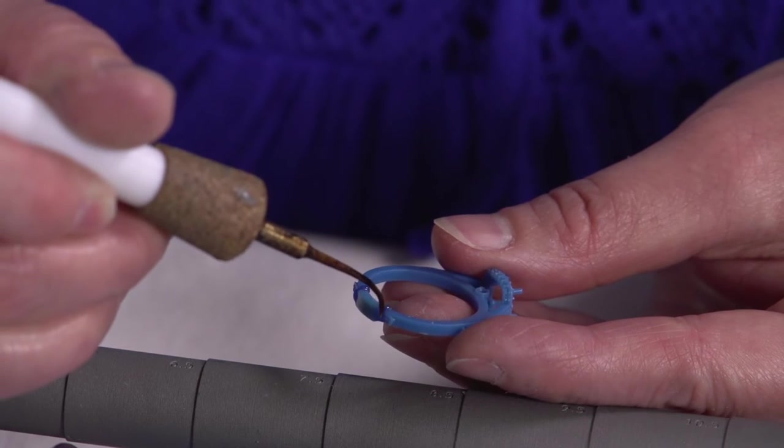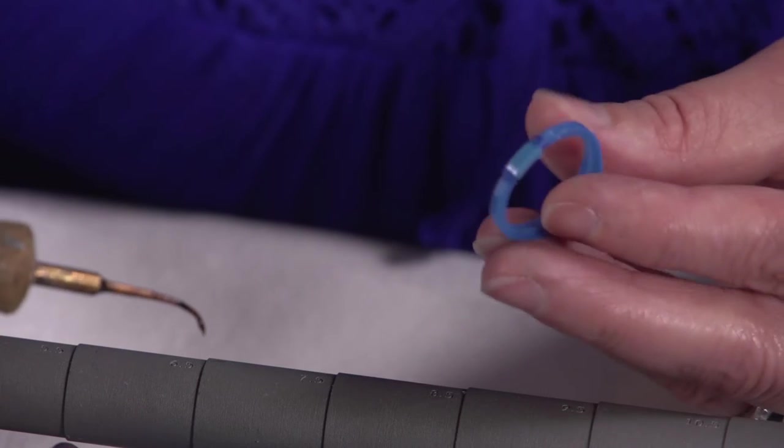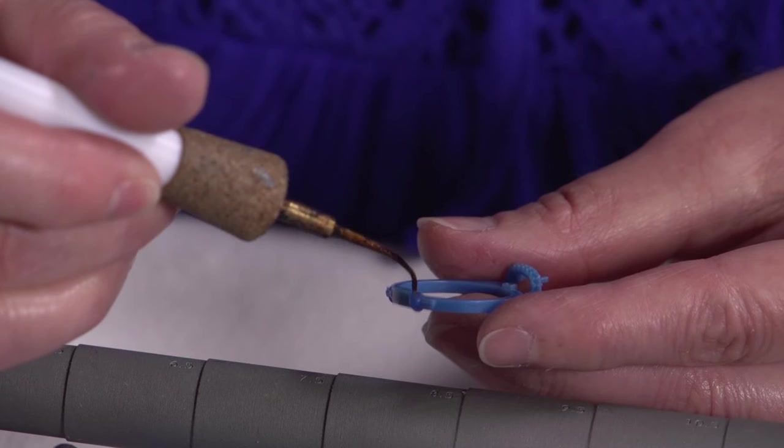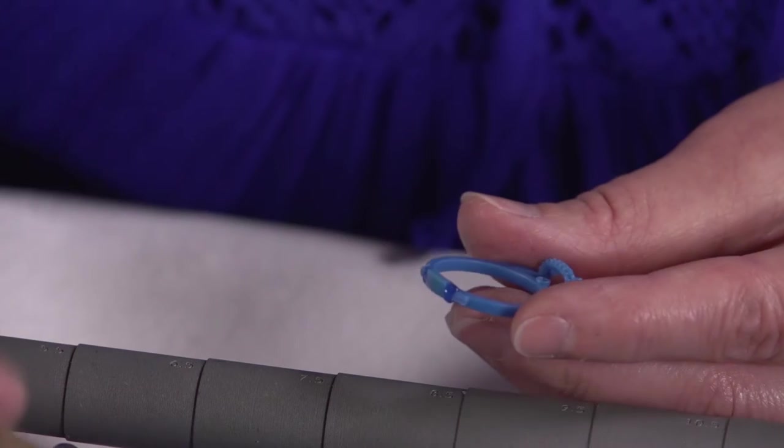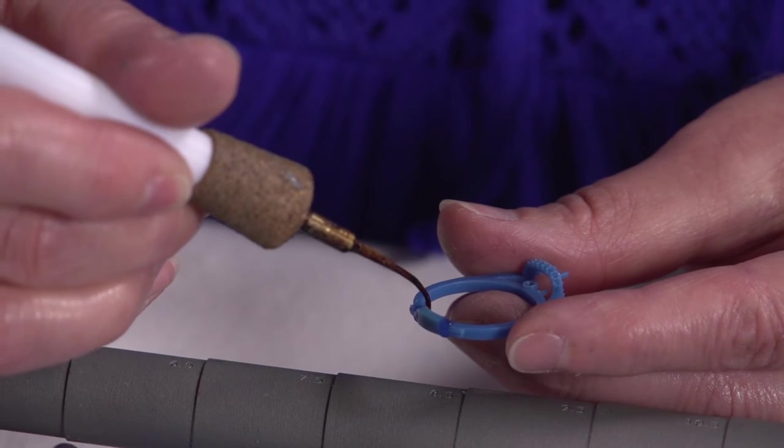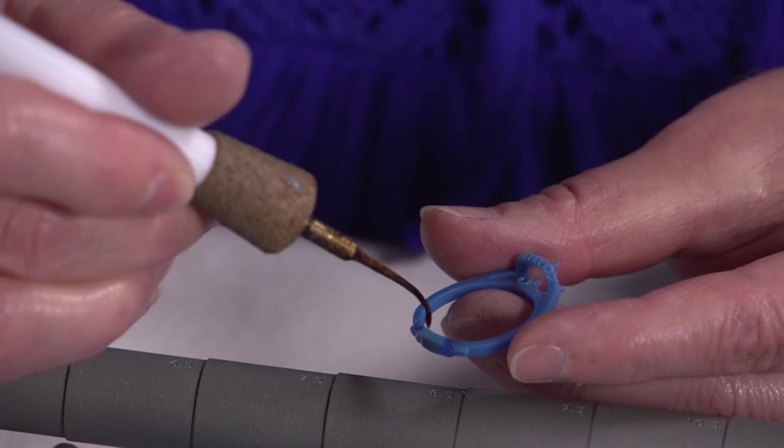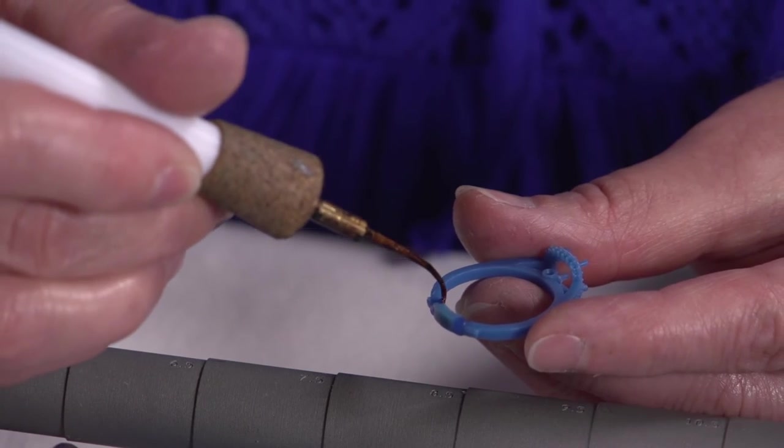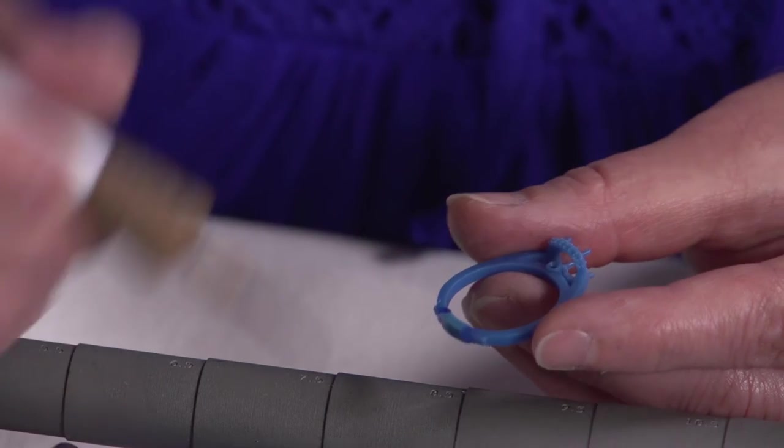When you size it in wax, it's not unlike sizing in the metal. It's a little easier to size in wax, but basically it's the same principle. You're using your mark of size and you're measuring, and instead of solder you're using wax, but it's very similar.